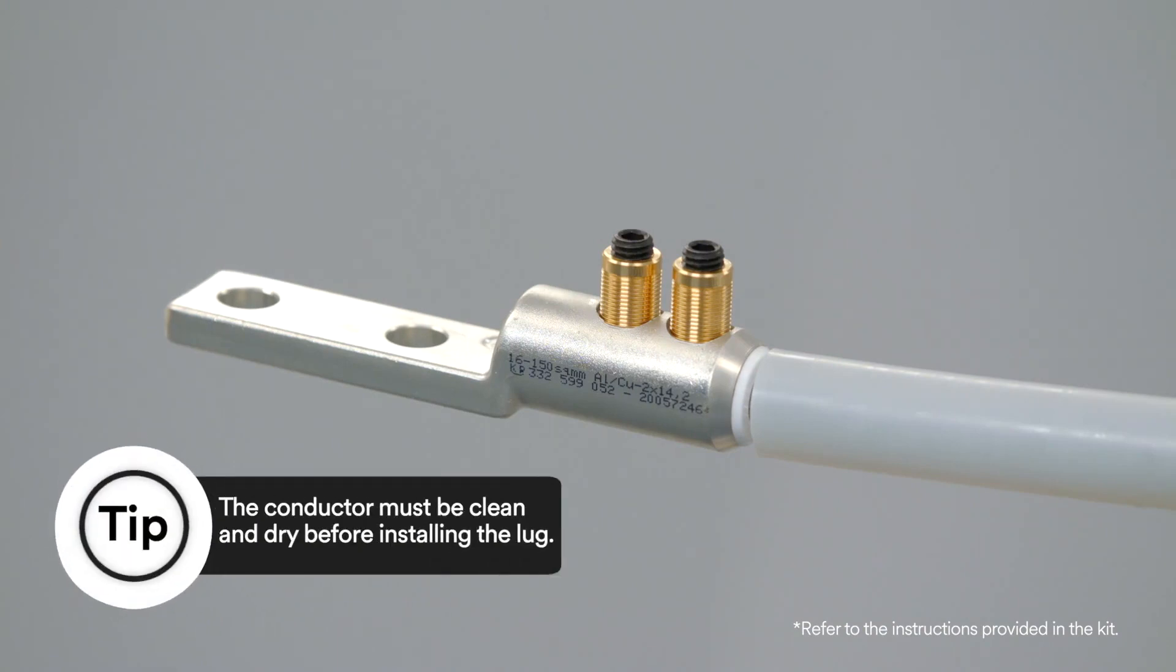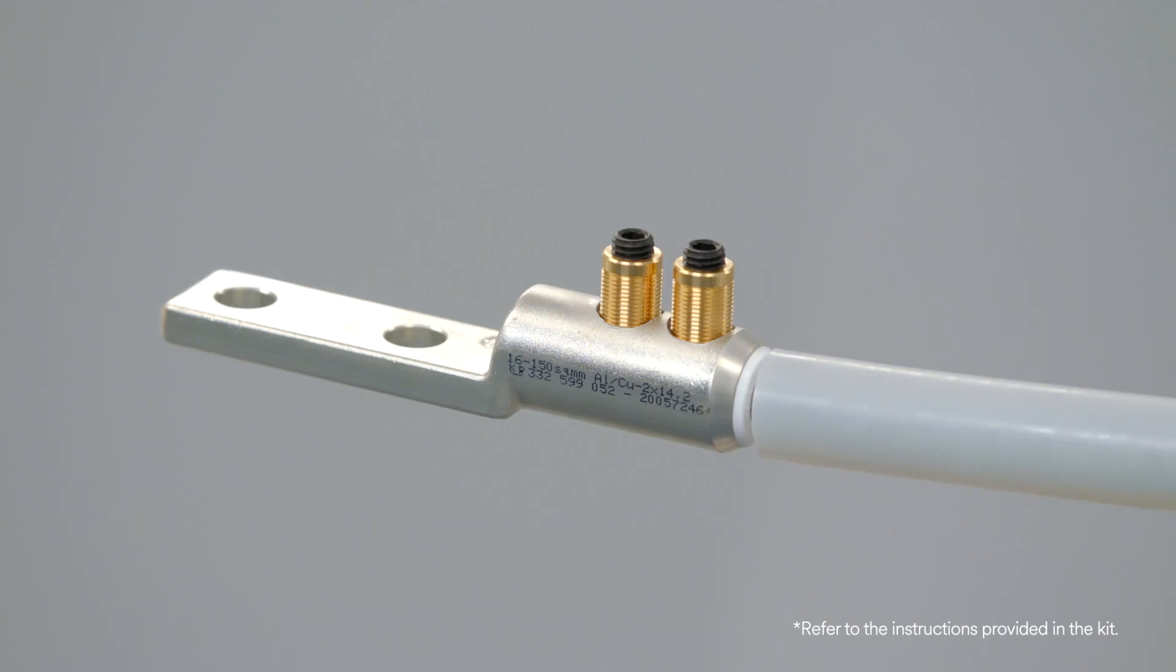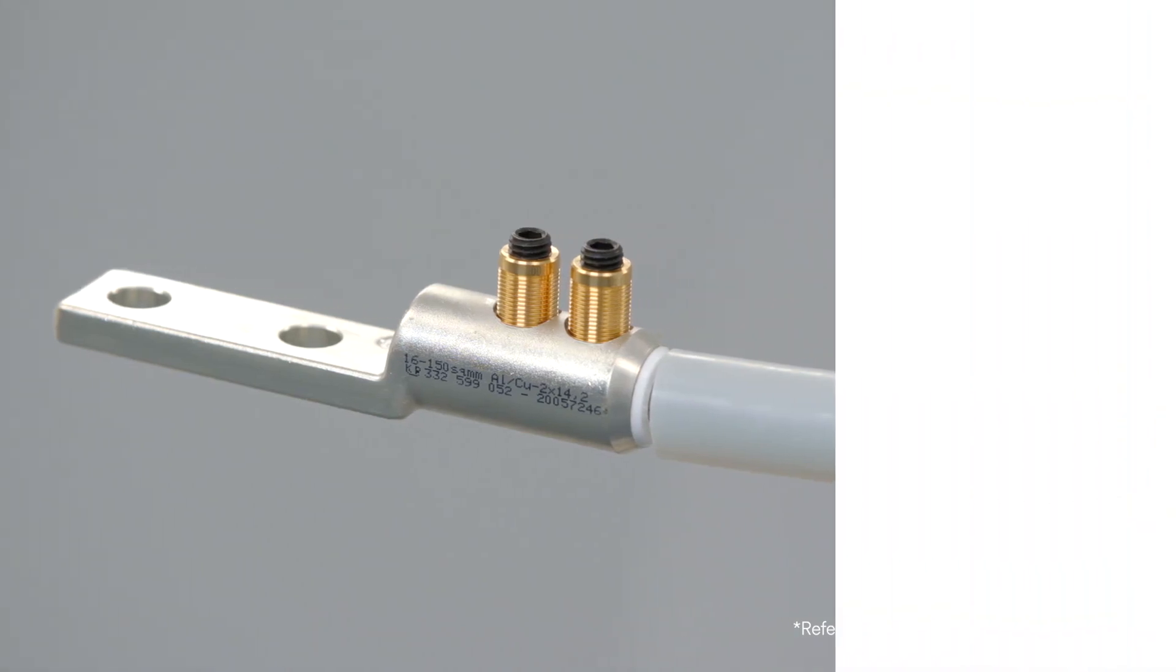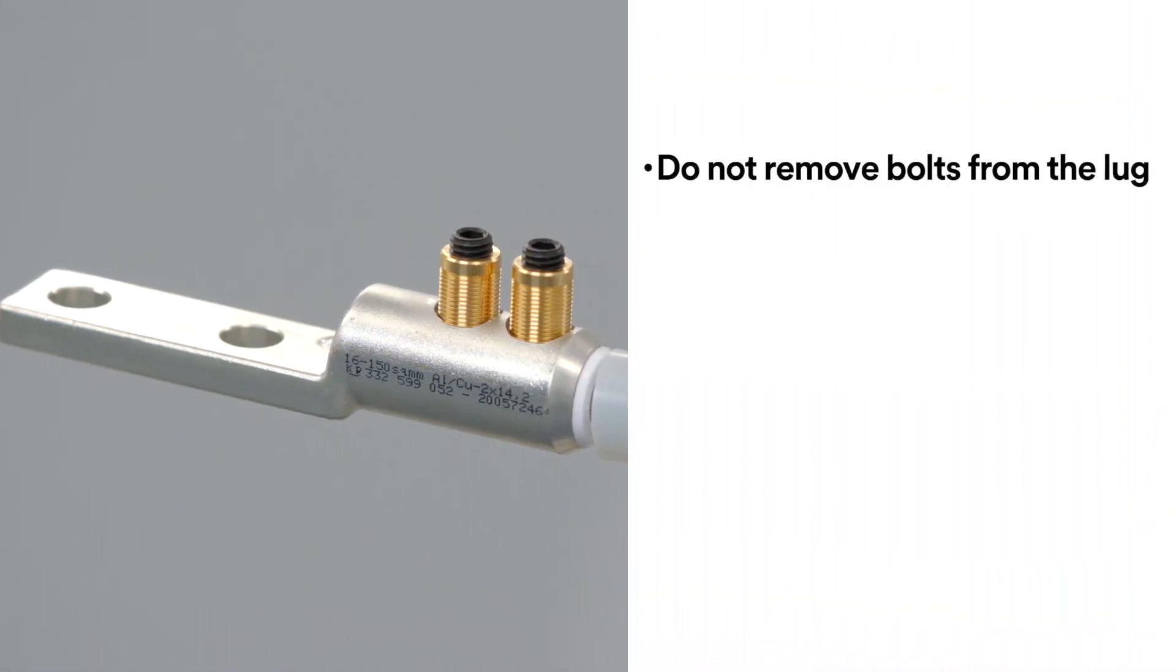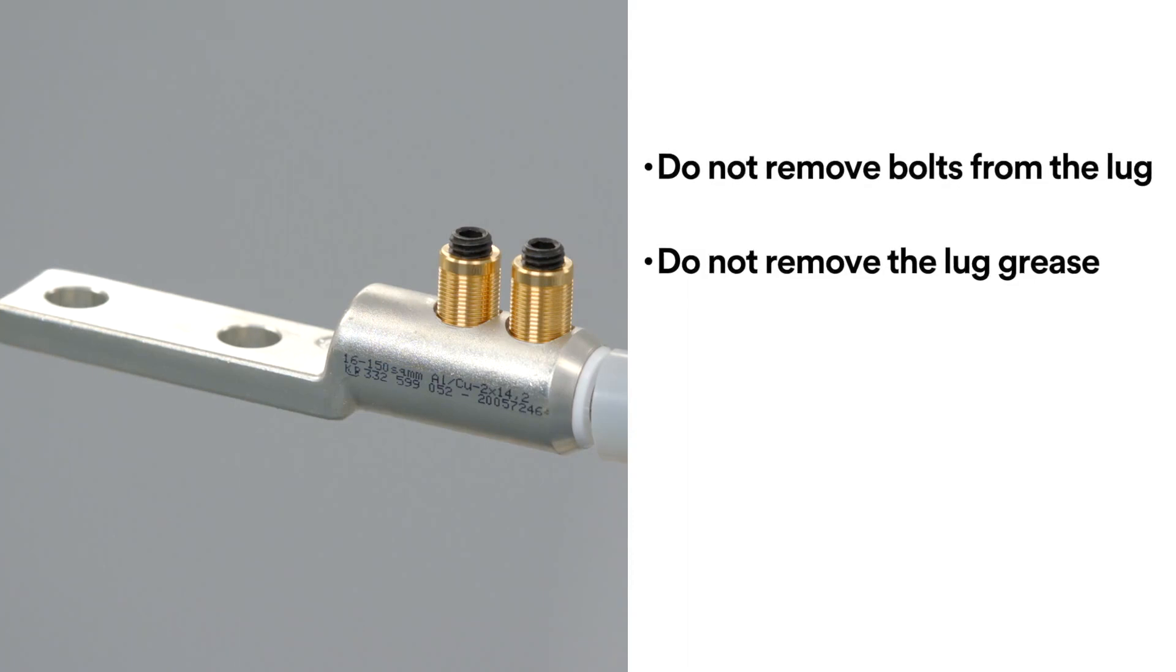For this video we will be using the 3M Mechanical Shear Bowl two-hole lug QL2 series. When installing the lug there are a few things you must remember. First do not remove bolts from the lug and do not remove the lug grease as it is pre-greased for the installation.